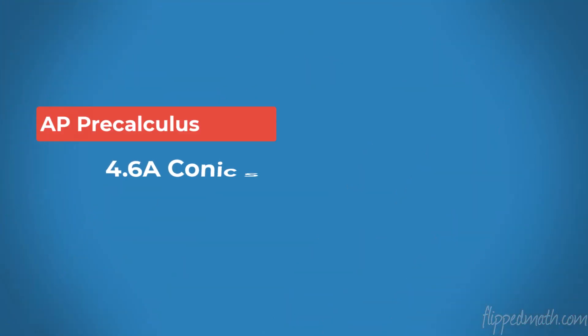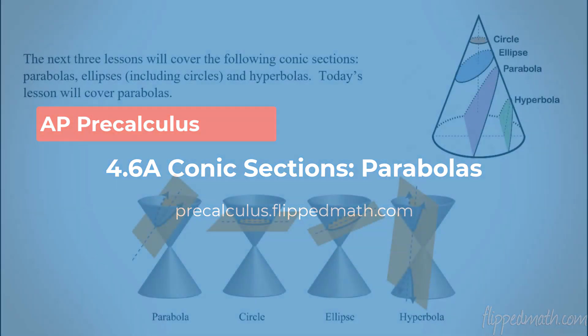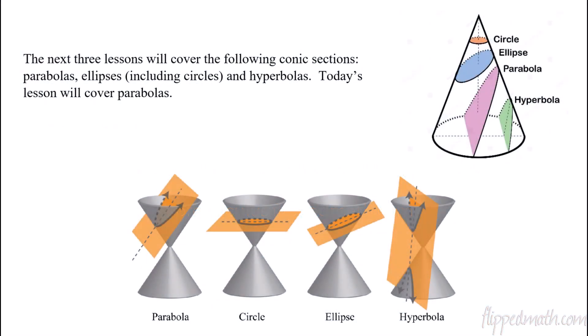Hello, PreCalc kids. Welcome back to another lesson in AP PreCalculus. This is Mr. Bean, and today we're going to start the beginning of conic sections. We're going to have three lessons on conic sections. Those three lessons will be parabolas, ellipses — and those ellipses will include circles — and then hyperbolas.